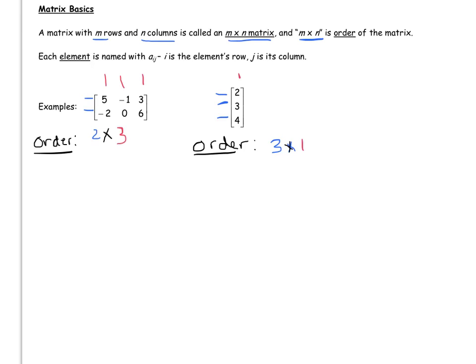So again, the naming of matrices or the way to describe their size is to describe their order. So a 2 by 3 and a 3 by 1. As soon as you specify that, you know the size of the matrix and what it looks like.